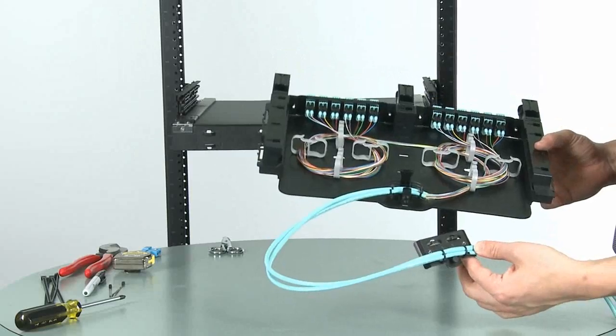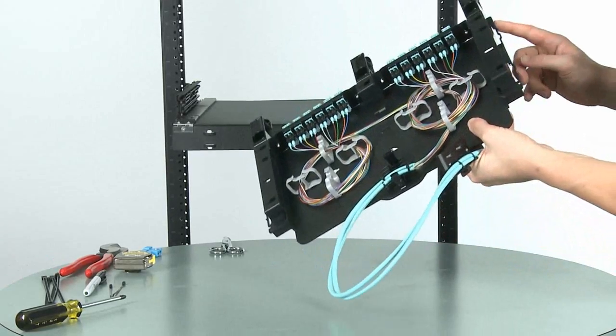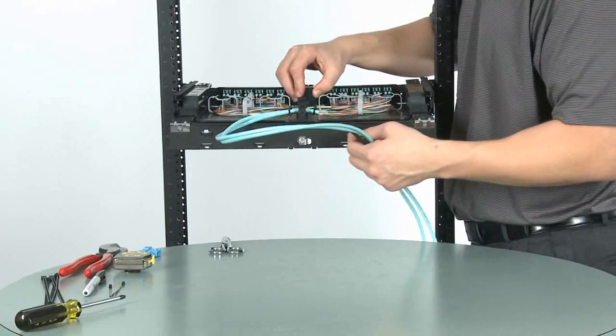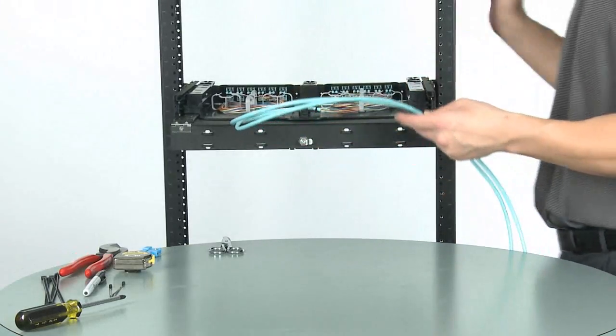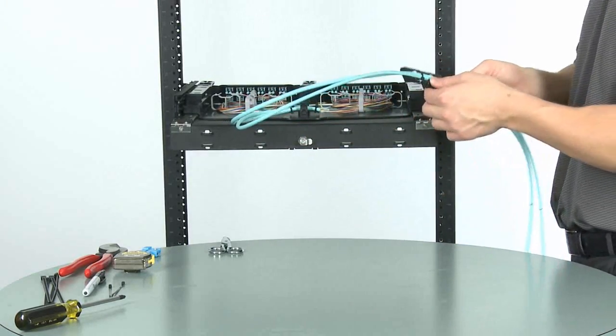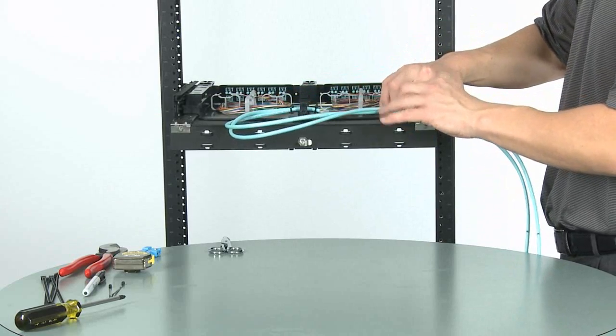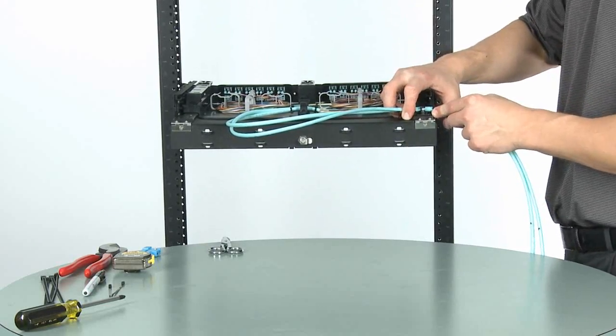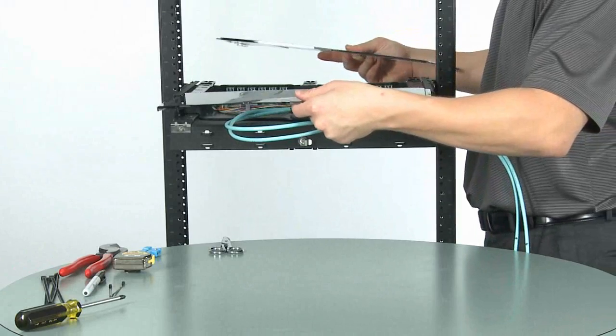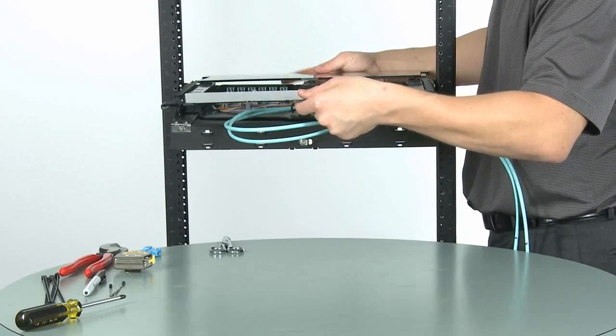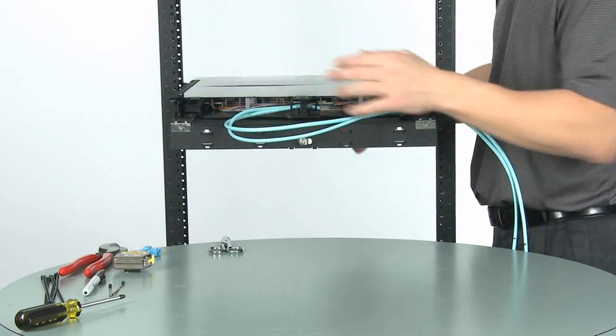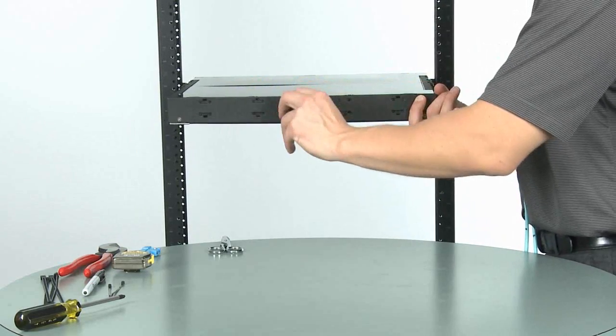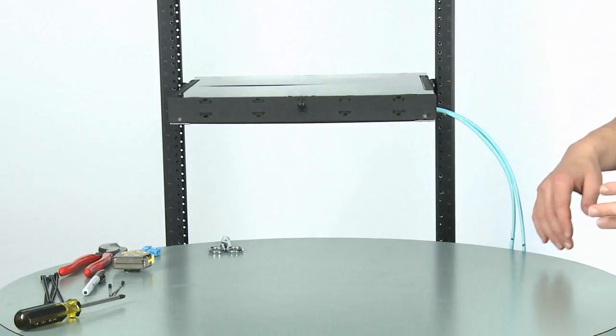I'm now going to reinsert the sliding tray and the strain relief bracket back into the hardware. So on the side of the tray, we're going to line the rails up in the housing. And we're just going to slide it back until it reaches that positive stop. I'm going to insert our strain relief bracket by lifting up on the plunger, sliding in the two protrusions and pushing until it clicks in place. And reinstall the covers. Close the doors. And our fiber is now terminated.